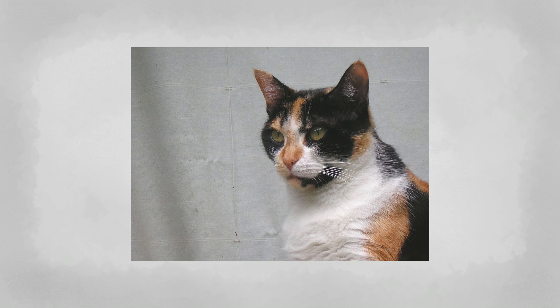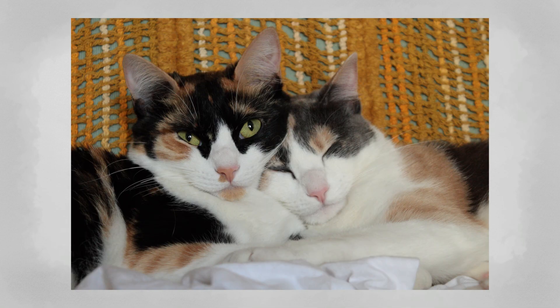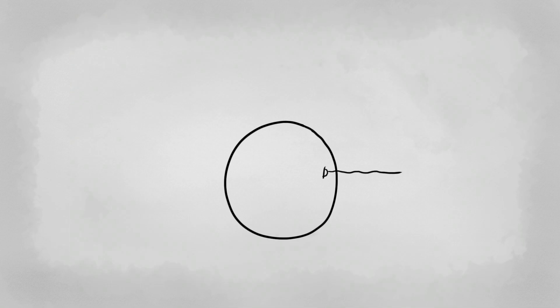This is most easy to see in calico cats. The color of their fur is coded by the X chromosome. So whether orange or black remains depends on which parent the trait is coming from. So identical twin calicos will look different.